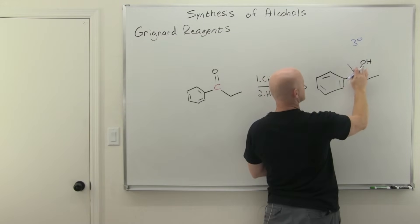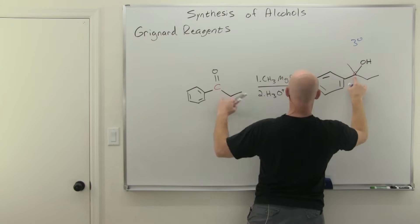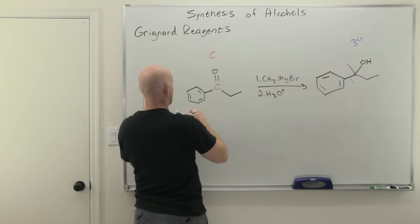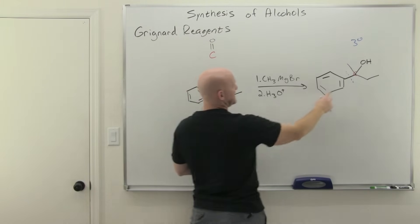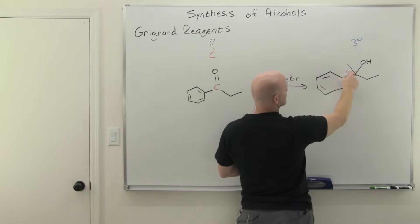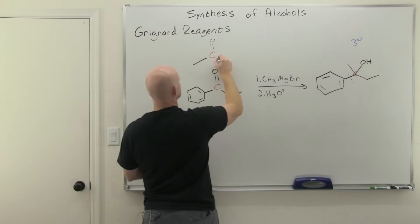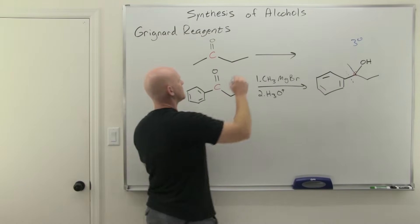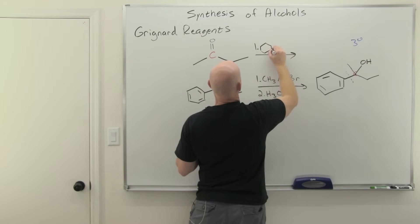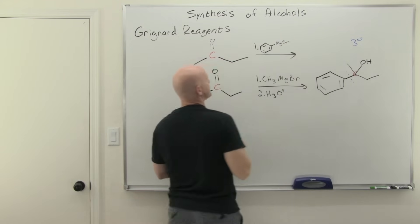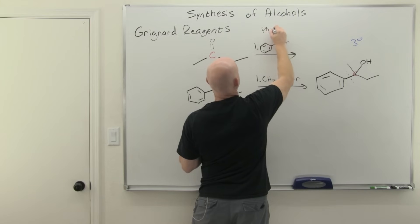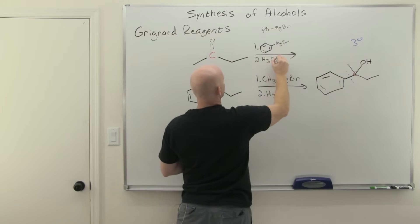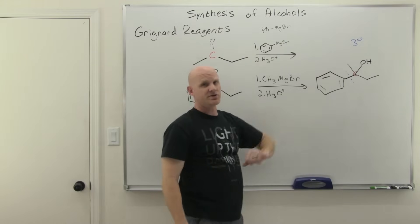For the second approach, we form the carbon-carbon bond between the carbonyl carbon and the benzene ring. The ketone now has a methyl group on one side and an ethyl group on the other. The Grignard reagent is phenyl magnesium bromide, sometimes abbreviated as PhMgBr, followed by an acid workup step. This also produces the same tertiary alcohol.